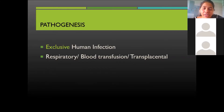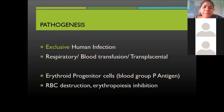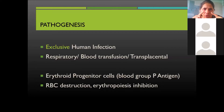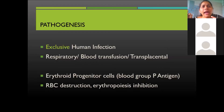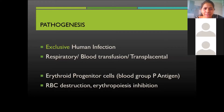Infection can be transmitted by respiratory secretions, blood transfusion, or transplacentally. The erythroid progenitor cells have a blood group P antigen — P for Parvovirus — which serves as the receptor for adhesion. The virus then inserts itself inside the progenitor cell before complete RBC formation.